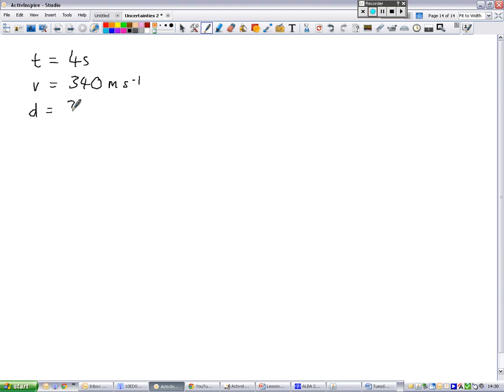What we're trying to figure out is distance, how far away the storm is. So we write a question mark for that. We check that these are in the standard units, which they are, metres per second, seconds. We don't have to change them in any way there.